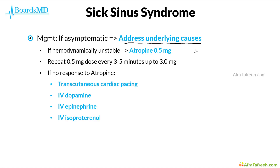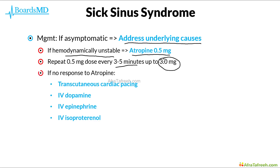However, if the patient is bradycardic and becomes hemodynamically unstable in the context of sick sinus syndrome, then we simply go back to our ACLS bradycardia with pulse algorithm. We first can give the patient atropine 0.5 milligrams, and we are able to repeat this 0.5 milligram dose every three to five minutes, up to three milligrams total. Additionally, if there is no response to atropine, we can perform transcutaneous cardiac pacing, and could also resort to IV dopamine, epinephrine, as well as isoproterenol.